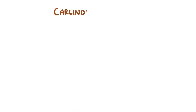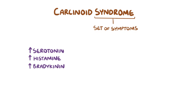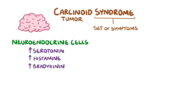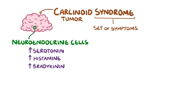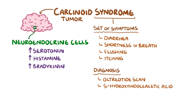Treatment of the carcinoid tumour itself with surgical resection or chemotherapy can also help to alleviate carcinoid syndrome. To quickly go over the main points: carcinoid syndrome is a set of symptoms that occur as a result of the overproduction of serotonin, histamine and bradykinin by neuroendocrine cells which develop into a carcinoid tumour. The classic symptoms include diarrhoea, shortness of breath, flushing and itching. Diagnosis can be made with an octreotide scan, as well as elevated 5-hydroxyindolacetic acid in the urine and decreased niacin levels in the blood.